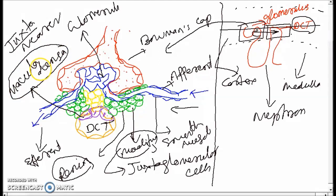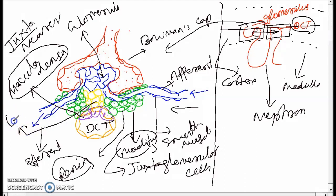The major role of macula densa is to sense the nature of sodium — the amount and concentration of sodium present in the nephrons.